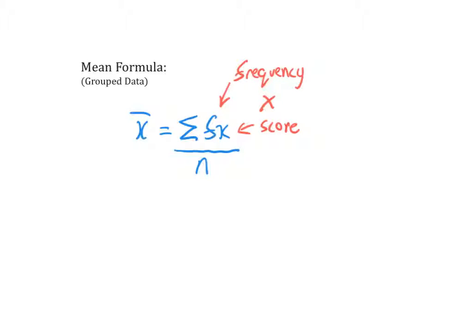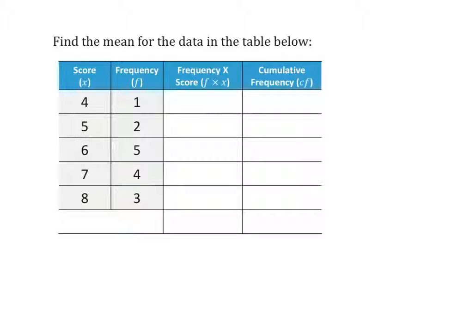So let's have a look at an example of how to calculate the mean of a data set from a frequency distribution table. In our example, we have been provided with a frequency distribution table. When you get a question to do, you will normally be provided with these first two columns, the score and the frequency, and it's up to you to complete or add in the remaining two columns that you need to calculate the mean from the table.